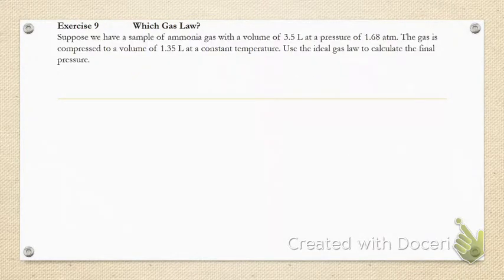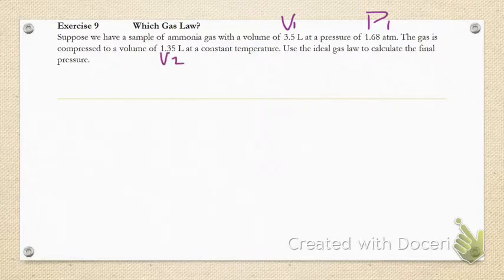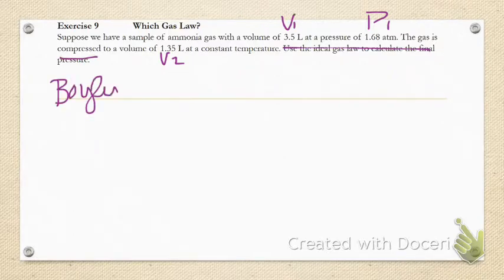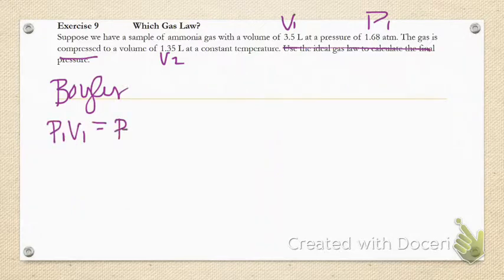Now let's look at another one. Which gas law would we use? Let's see what we have: volume, pressure, the gas is compressed to a new volume V2 at constant temperature. It says use the ideal gas law to calculate the final pressure—I don't know why it says that because no, we're not going to do that. We're going to use Boyle's law because that's easier. So P1V1 equals P2V2.